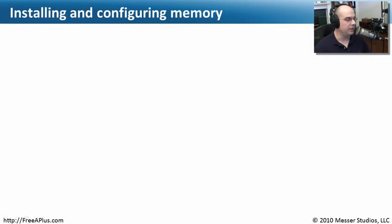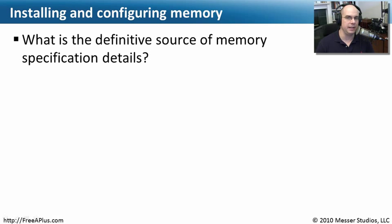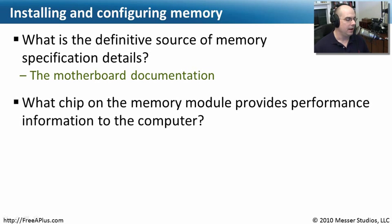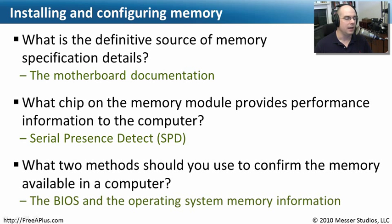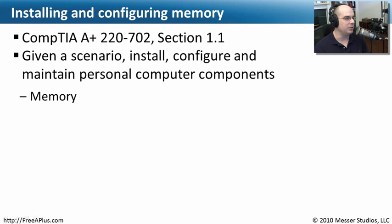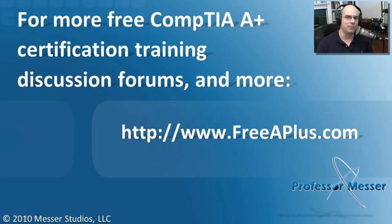Let's review what we've learned about installing and configuring memory. First: what is the definitive source of memory specification details? That's your motherboard documentation. Second: what chip on the memory module provides performance and configuration details? That's the SPD — the Serial Presence Detect chip. Third: what two methods confirm the memory now available in your computer? Check the BIOS to confirm the computer sees it, and also check your operating system to confirm the OS sees all the installed memory. That covers Section 1.1 of the 220-702 exam. Visit freeaplus.com for more free A-Plus videos, message boards, and more.